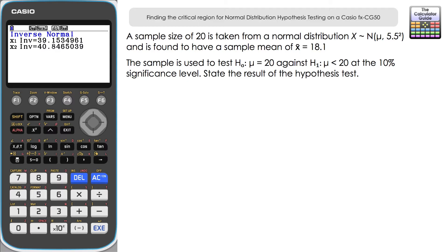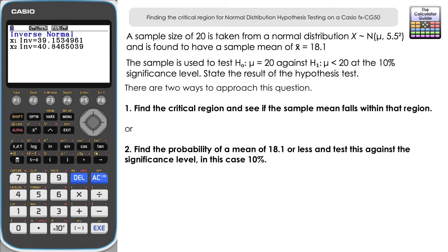For the second question, a sample of size 20 is taken from a normal distribution with mean μ and variance 5.5². The sample mean is 18.1. We test H₀: μ = 20 against H₁: μ < 20 — a one-tailed test — at the 10% significance level. There are two methods to approach this.